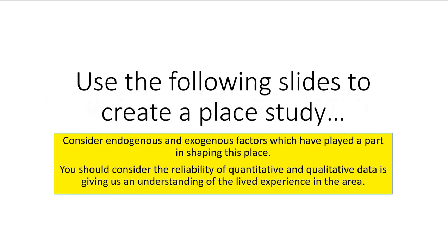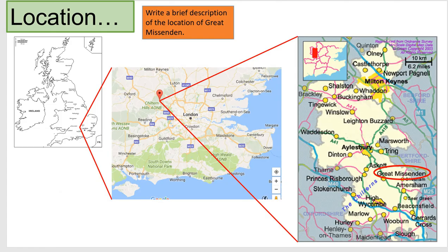I want us to create a place study, so open a Word document. We need to consider the endogenous and exogenous factors locally, nationally and globally that have shaped this town. Start with location — describe the location of Great Missenden, including the fact that it is an ideal location on the rural-urban fringe with great connectivity and transport arteries.